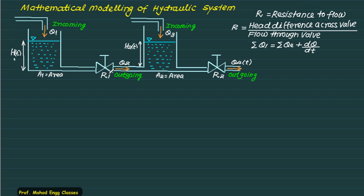To find R1 we require head H1T minus H2T, and for R2 we have head H2T. There is no head difference at the outlet so that equals zero. As far as the law of conservation is concerned, we define R in the same way — that is the head difference across the valve divided by flow through the valve. This is the same as: incoming discharge equals outgoing discharge plus the discharge increase in the control volume.